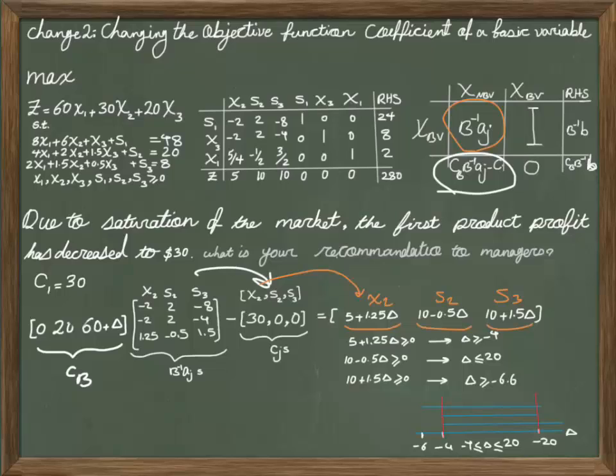I kind of draw a graph here that shows delta, and draw the line for each of those regions, and the intersection here falls between negative 4 and 20.